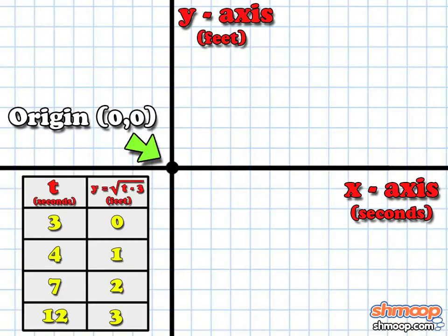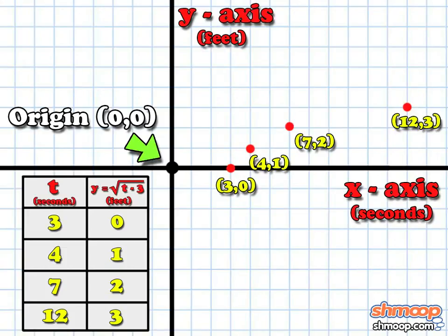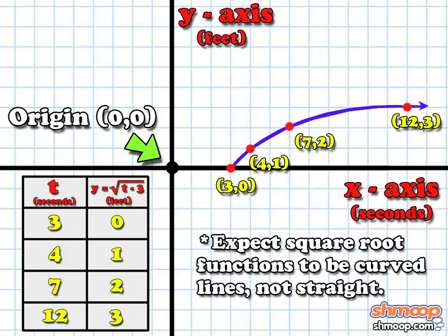Now let's plot these. The points are (3,0), (4,1), (7,2), and (12,3). Draw a smooth curve through the points. Expect square root functions to be curved lines, and don't try to graph a straight line through these points.